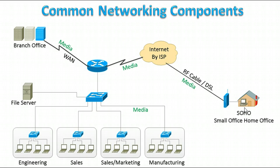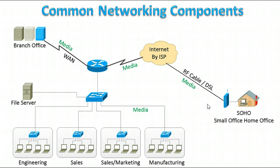There is also a small office home office user connected to the internet using RF cable or DSL technology. Usually when a remote worker is working from home, they use a VPN to establish a secure internet connection and log into the corporate office. So the small office home office can connect to the corporate network through this virtual private network.